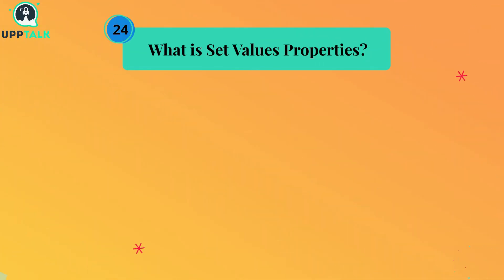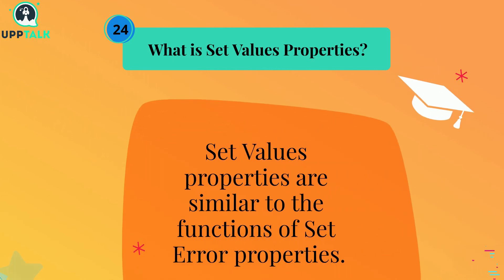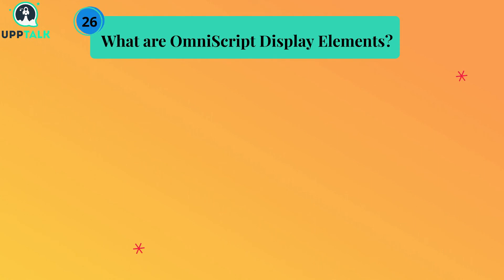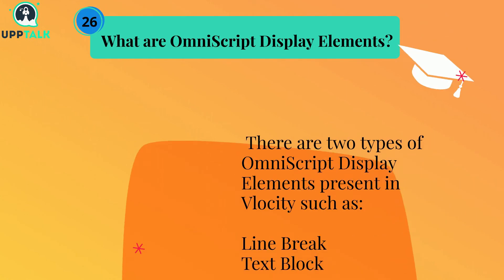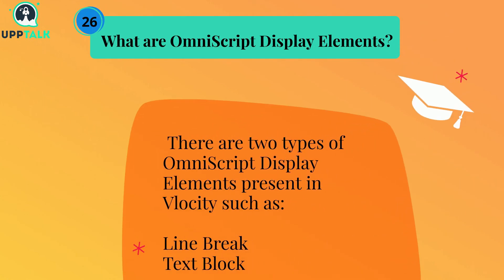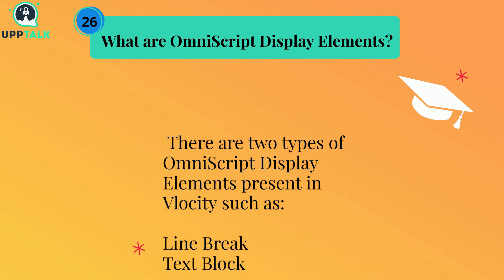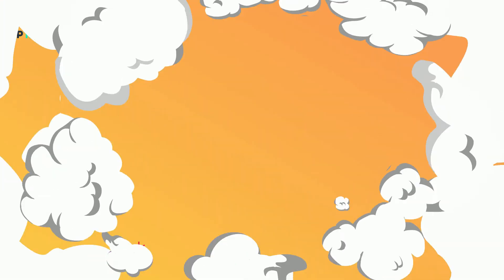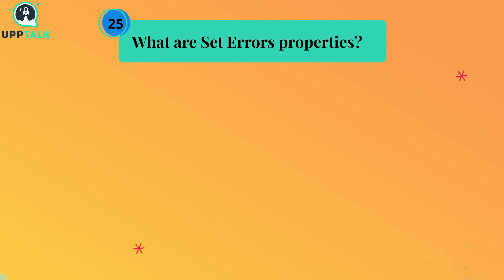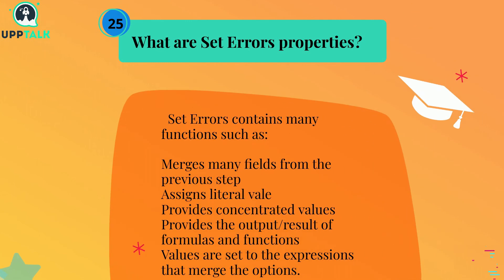What is set values properties? Set values properties are similar to the functions of set error properties. What are set errors properties? Set errors contains many functions such as: merges many fields from the previous step, assigns literal value, provides concentrated values, provides the output/result of formulas and functions, and values are set to the expressions that merge the options.